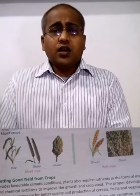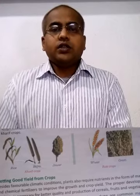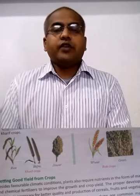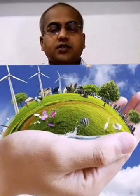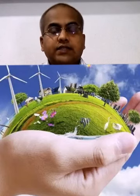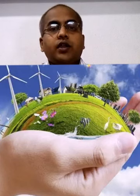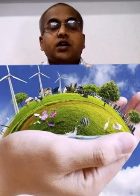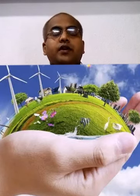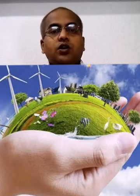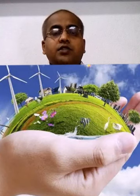Areas where rice grows need a lot of water, so rainfall is required. Cactus plants grow in desert areas. Coconut plants grow close to sea areas and need salty water. In this way, climate also affects the growth of a plant.